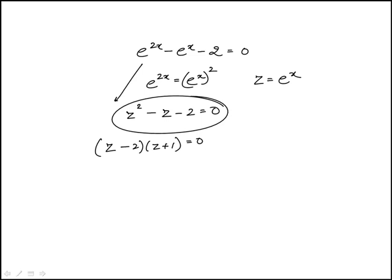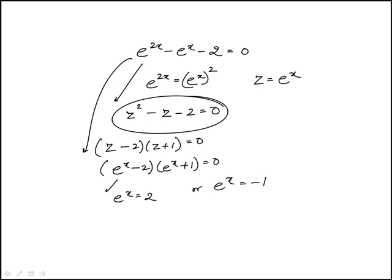Or essentially, if I replace z with e to the x, this is how it would factor. So we have two possible solutions: e to the x equals 2, or e to the x is equal to minus 1.